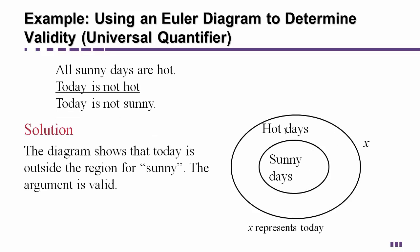The big circle represents hot days and it says all sunny days are hot. Sunny days are completely inside hot days. Today is not hot so the x has to be outside of the hot circle and today is not sunny it is also outside the sunny circle. Therefore true and valid argument.